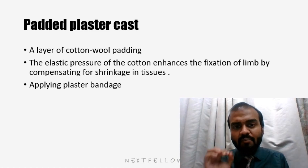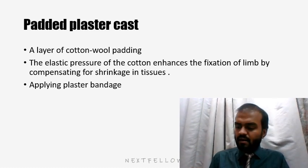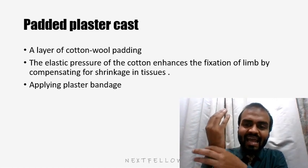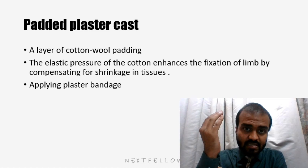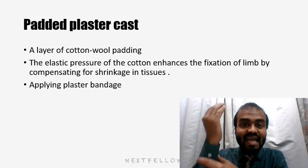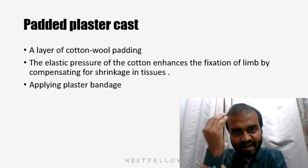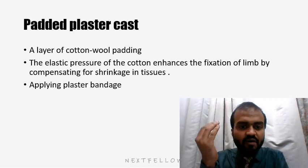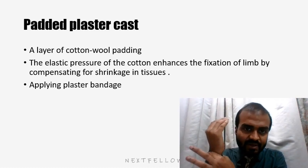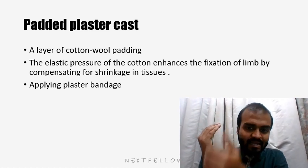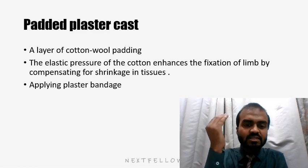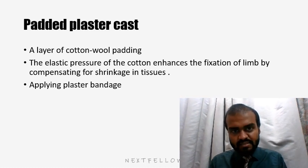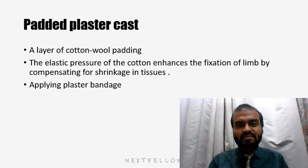A good padded plaster cast consists of a layer of cotton wool padding. The elastic pressure of the cotton wool enhances the fixation of the limb because it compensates for any shrinkage in the tissue. We know that whenever there is a fracture, there will be some edema or swelling which will eventually go away. The elastic pressure of the cotton padding compensates for any shrinkage in the tissue, after which we apply the plaster bandage. This is what is meant by a well-padded plaster cast.